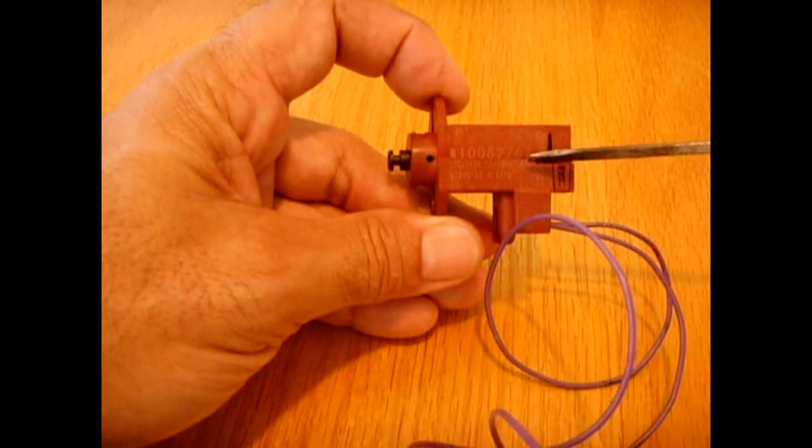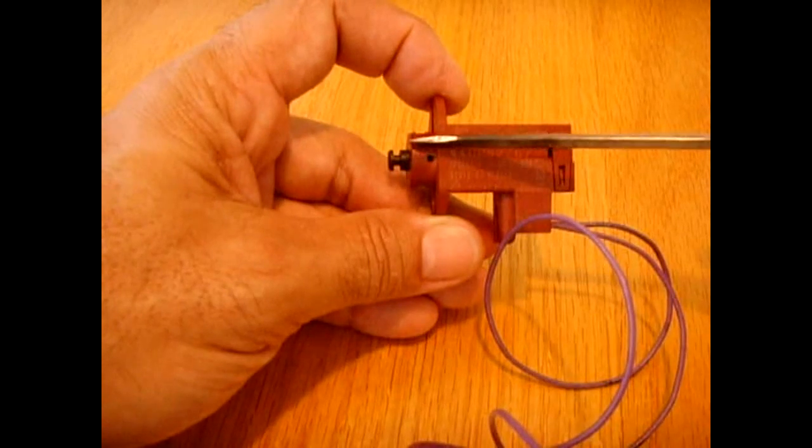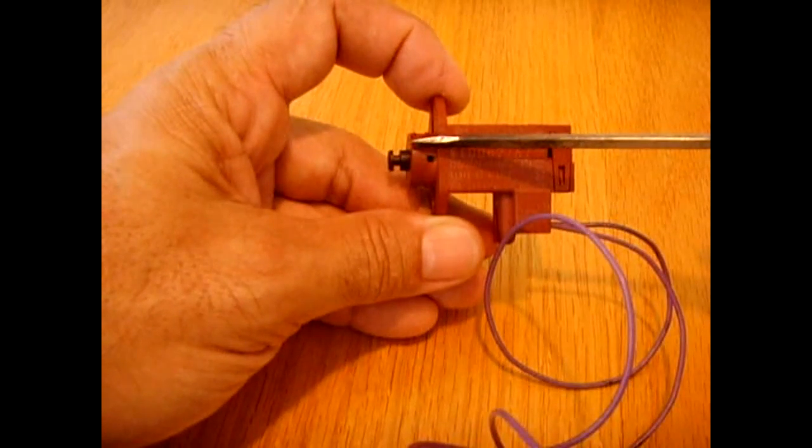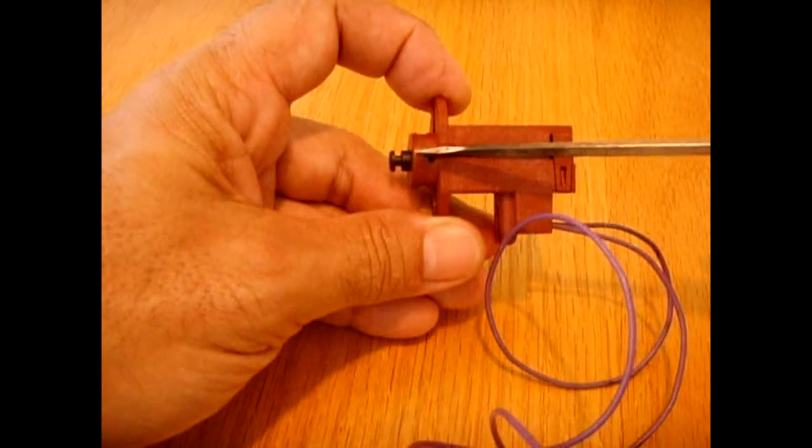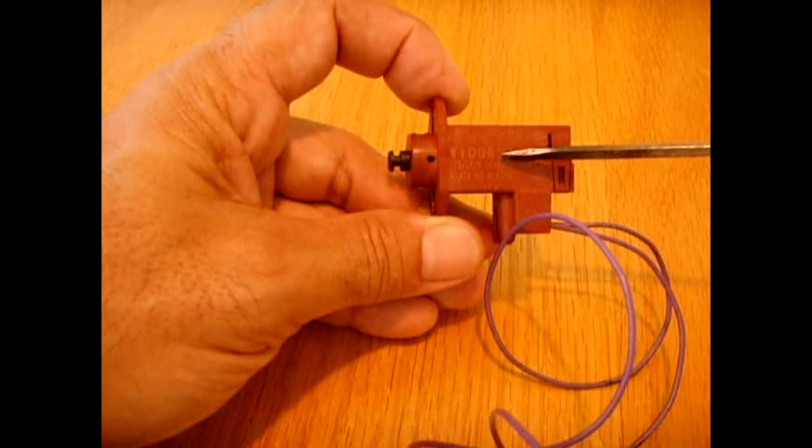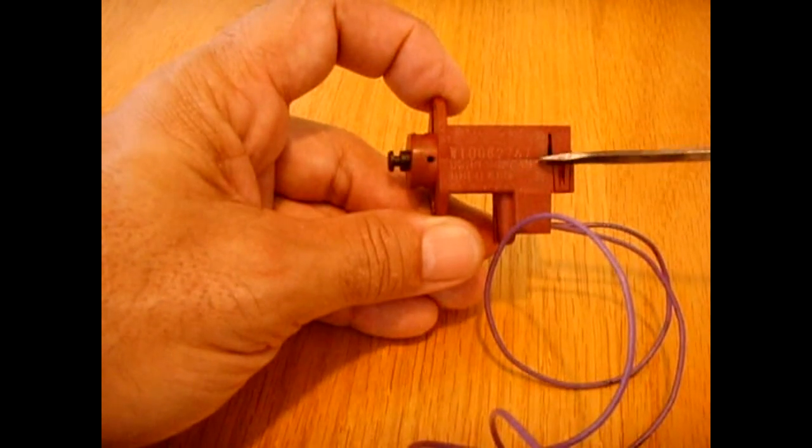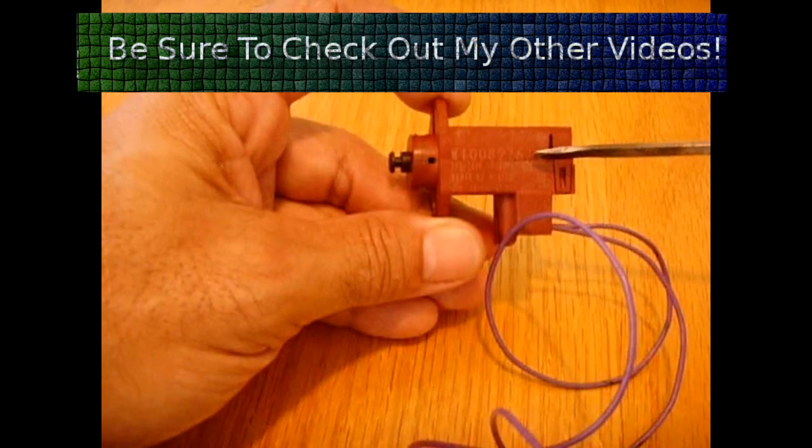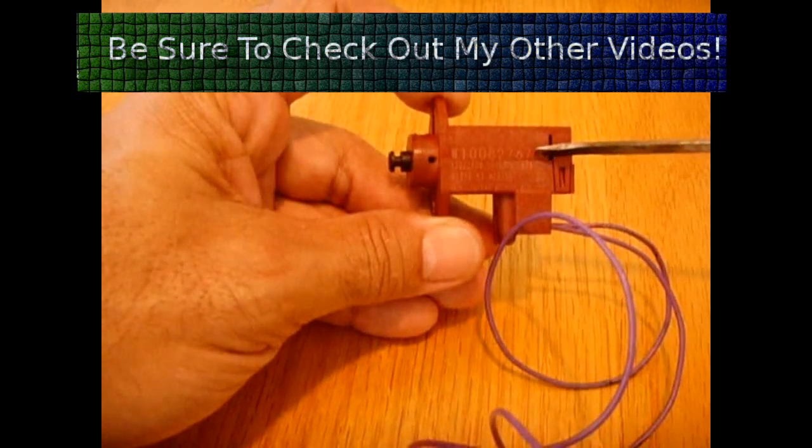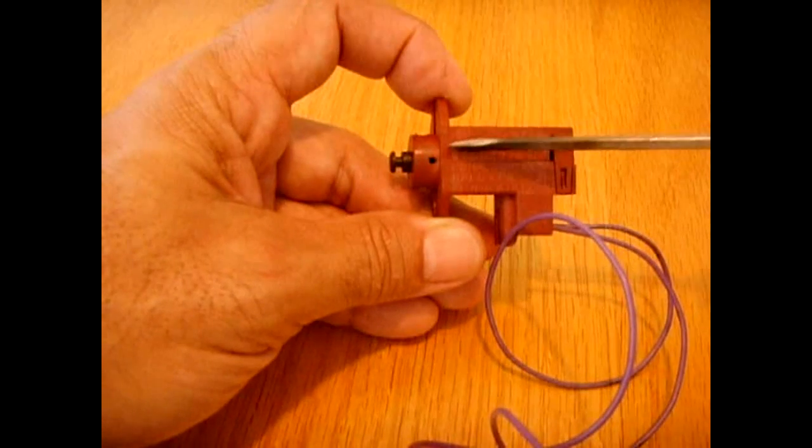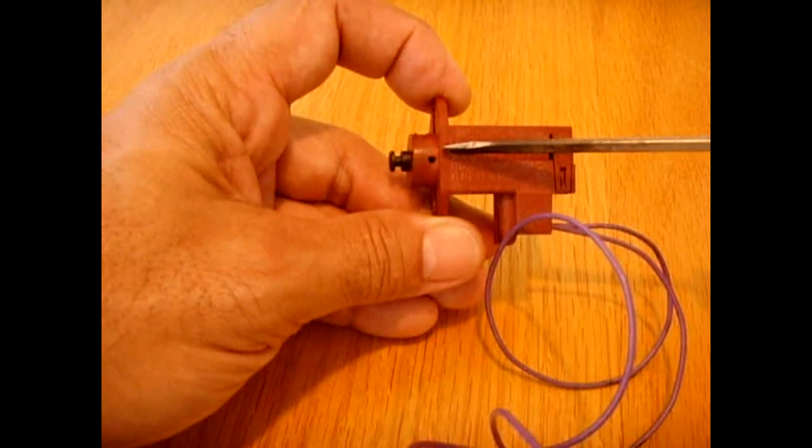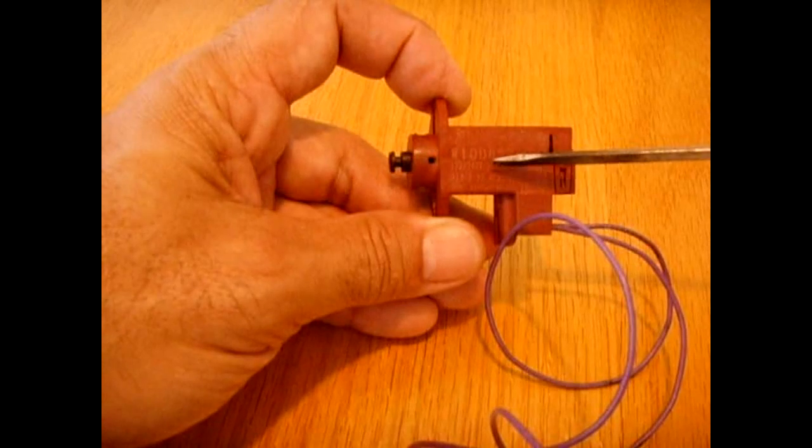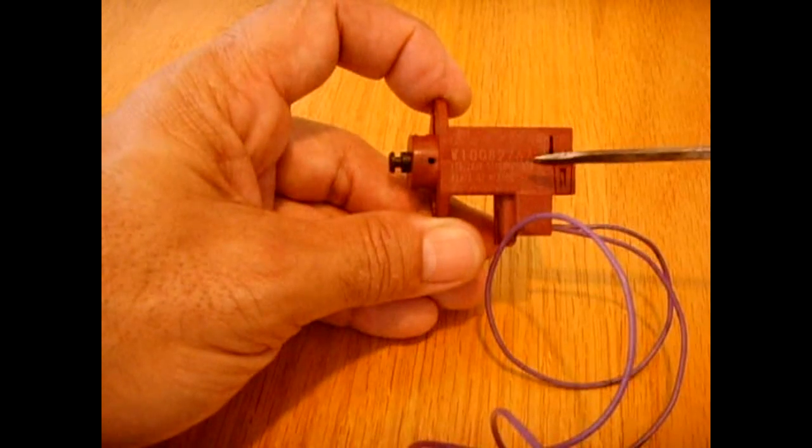Because the wax has nowhere to go inside that little chamber, pressure begins to build and it pushes this piston outward. Once the wax cools, there's a return spring in here that pushes it back all the way in to the point where the wax has been cooled and the volume has been returned to normal.